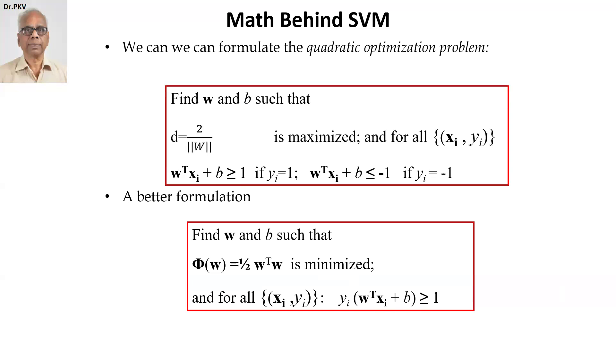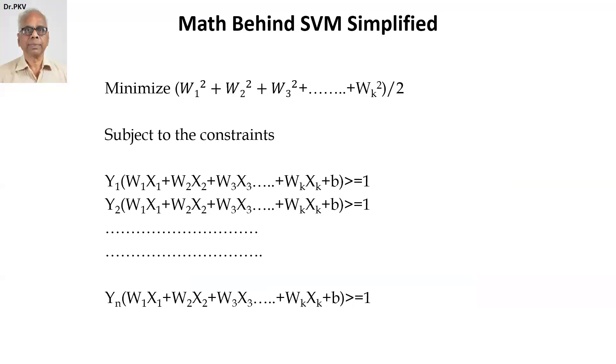And it's not difficult, but it looks a little frightening or complex. Now, I simplify this further for the sake of clarity in a much, much better manner, which is minimize W1 squared plus W2 squared plus W3 squared, and so on, plus Wk squared divided by two. Subject to the constraints, Y1 into W1 X1 plus W2 X2, etc., plus Wk Xk plus B greater than or equal to one.